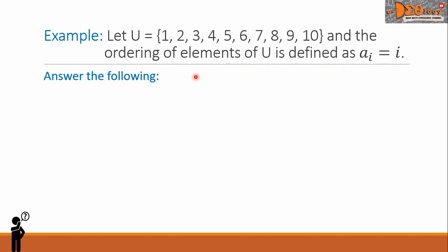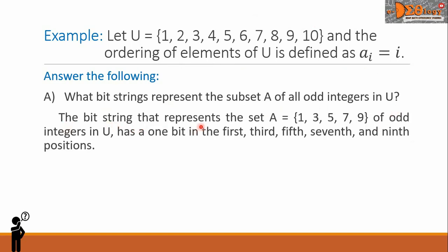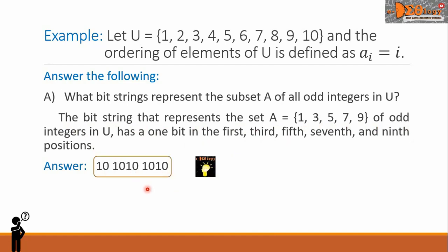Let us answer the following questions. Letter A: what bit strings represent the subset A of all odd integers in U? The bit string that represents the set A with elements 1, 3, 5, 7, and 9 of odd integers in U is: 1 0 1 0 1 0 1 0 1 0. This is the final answer.